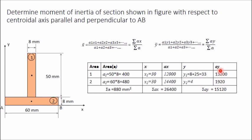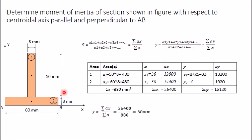Sum the Ay column to get ΣAy, sum the Ax column to get ΣAx, and add the two areas to get ΣA. Substituting into the equations gives x̄ = 30 mm.